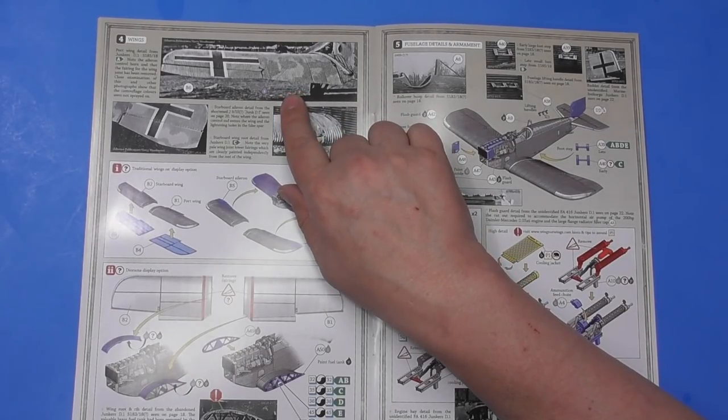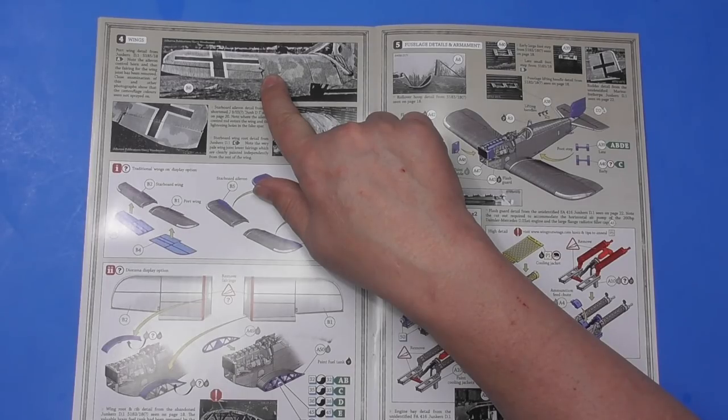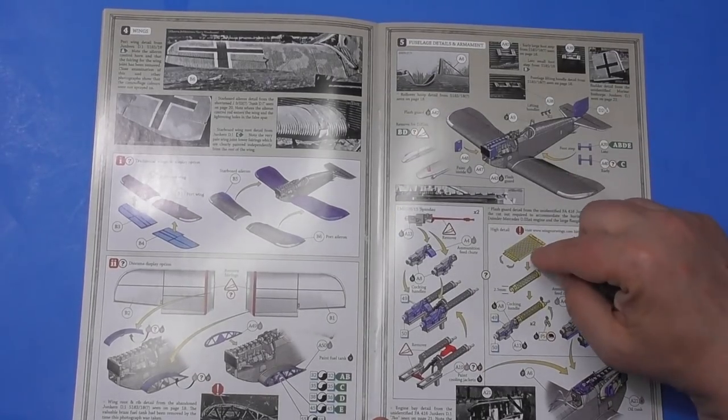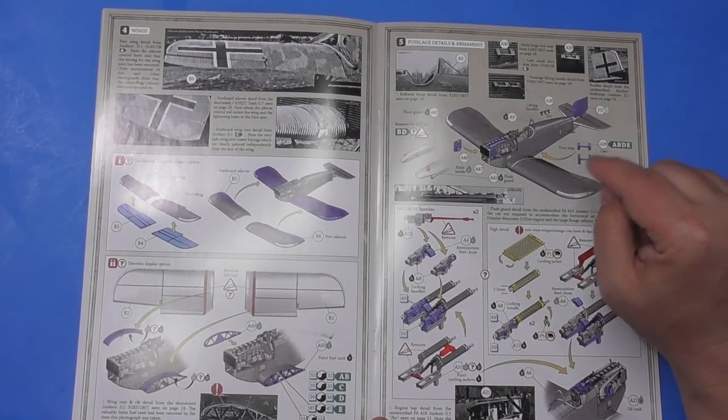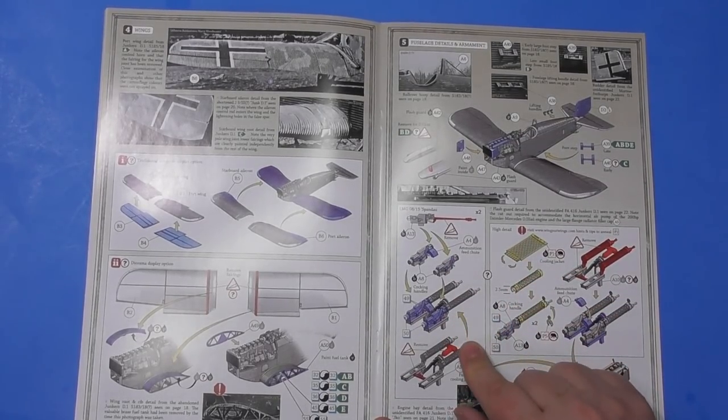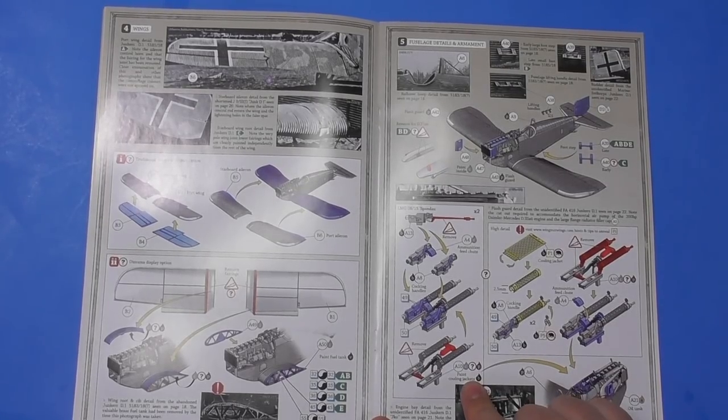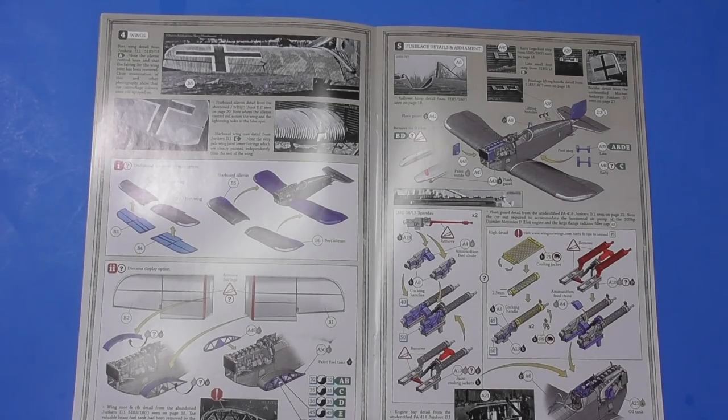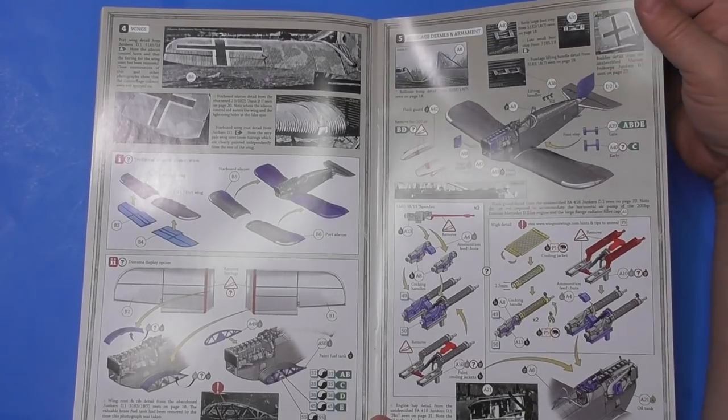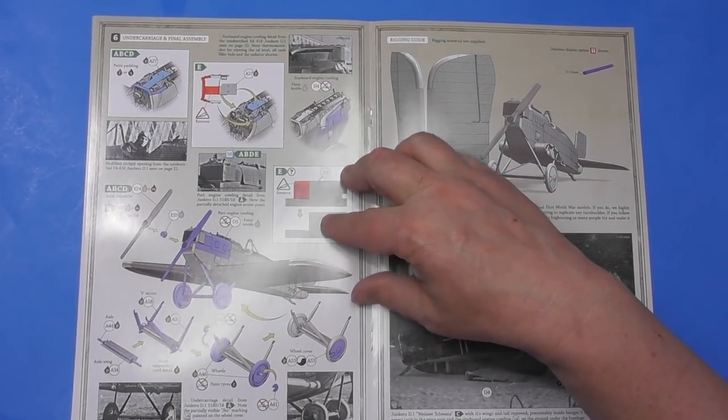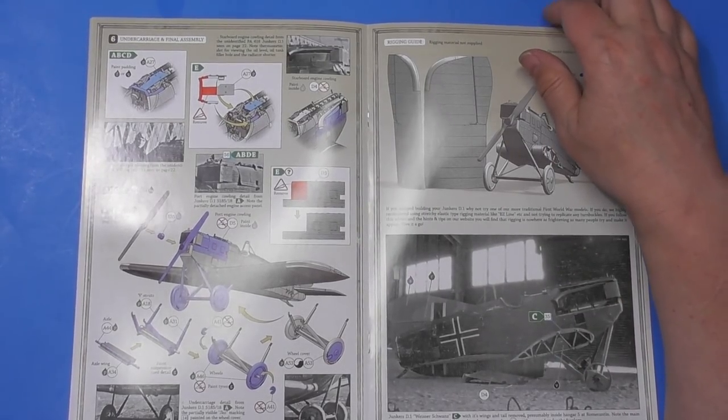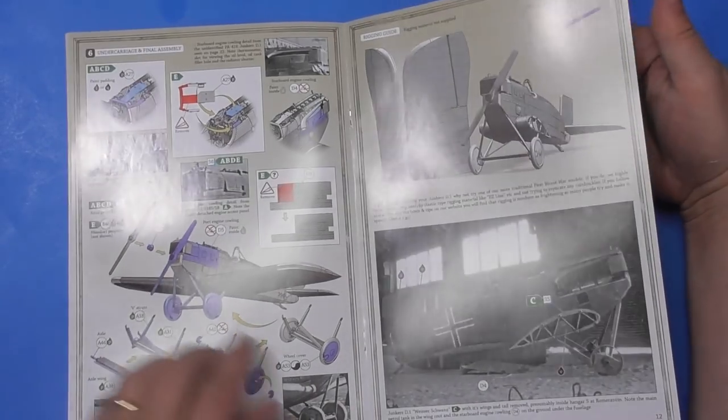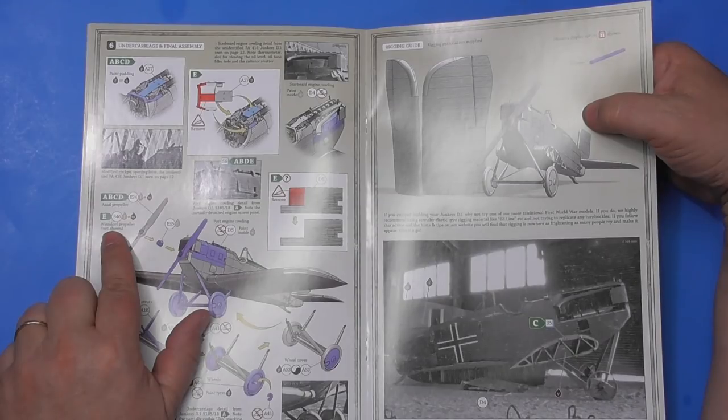Port wing detail, aileron control. It says to note. Putting the wings on. So those P parts were the cooling jackets. That's nice. Here's the guns for the cowl, the Spandau guns. So it depends on which guns you're doing. They're both cowl guns. Like I said, I've never built a World War I aircraft, so I know less about this than I do about any other kind of aircraft. Undercarriage and final assembly. Axial prop, Neandorf prop.